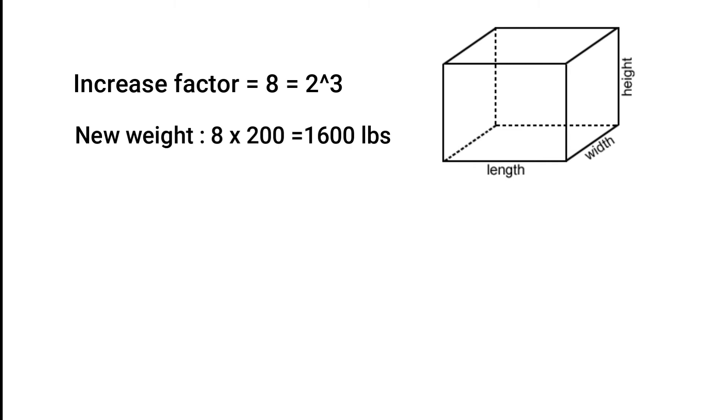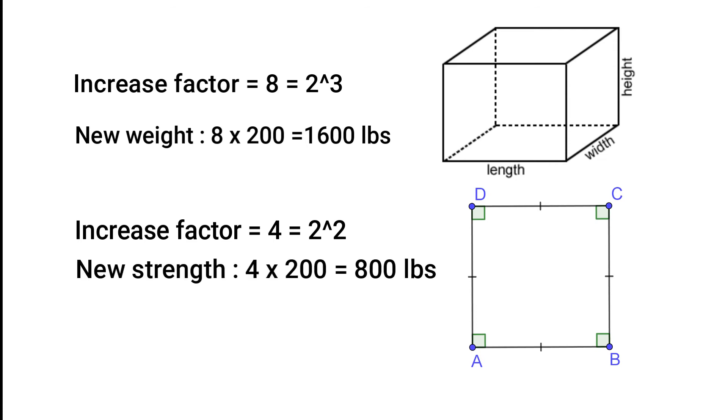But when it comes to the area of muscle fibers, it is only increased by the factor of 2 squared, because it only has 2 dimensions, so it's 2 multiplied by 2, making your lifting capacity only 800 pounds compared to your own body weight which is 1600 pounds.